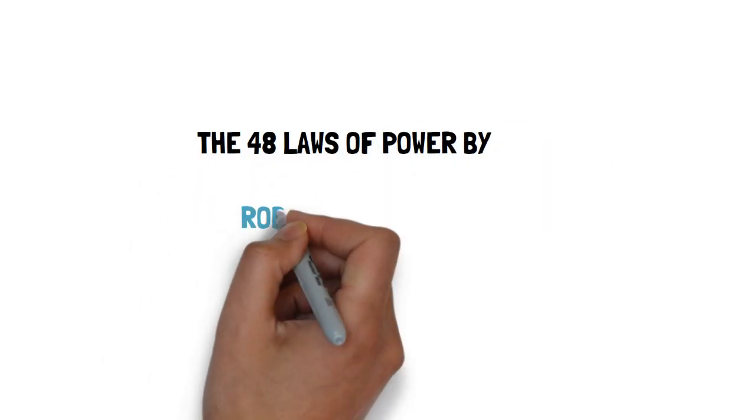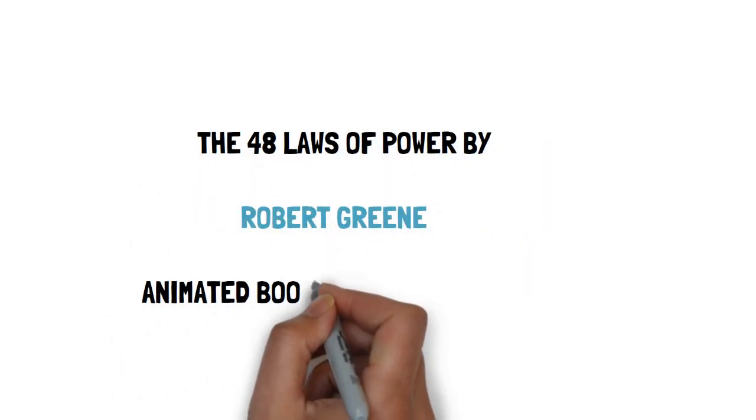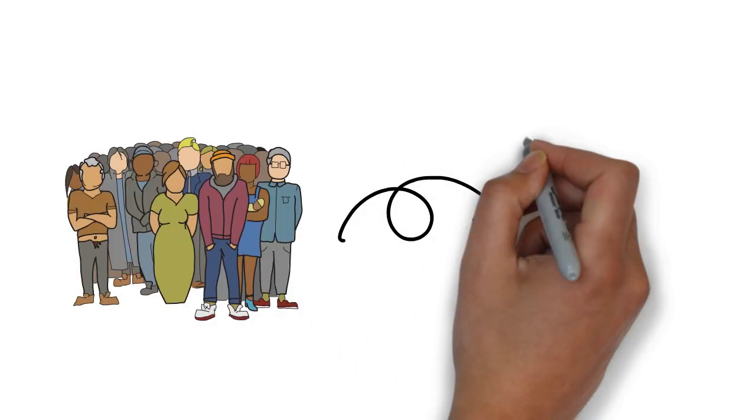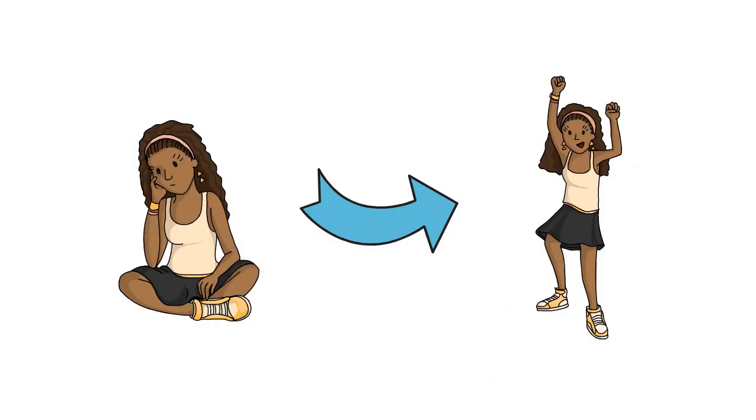The 48 Laws of Power by Robert Greene. Animated Book Summary. All Laws Explained. Hello guys, welcome back to Alpha Show, a channel that will completely change your life from negative to positive and make you the person you always wanted to be.